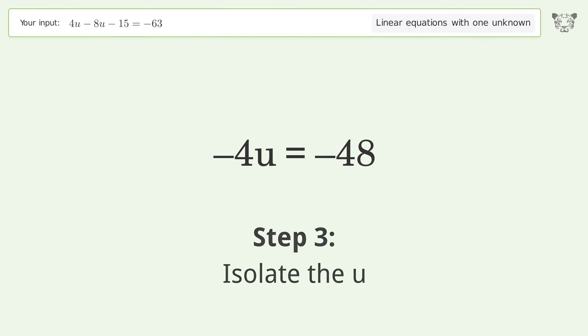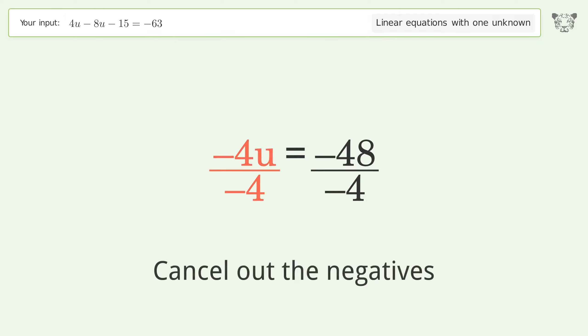Isolate u by dividing both sides by negative 4, then cancel out the negatives.